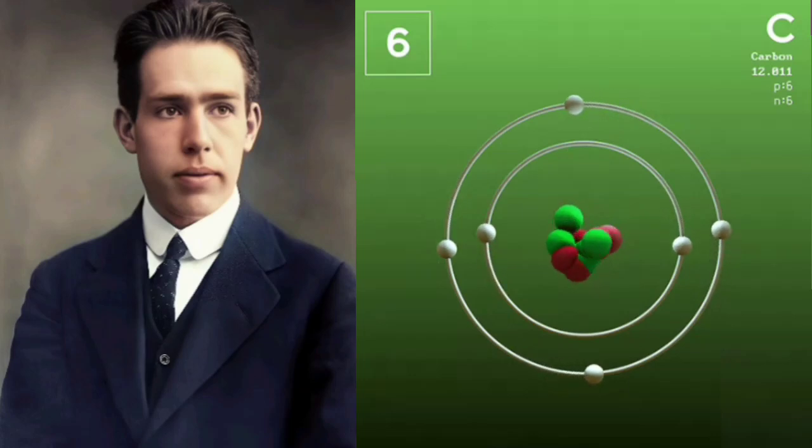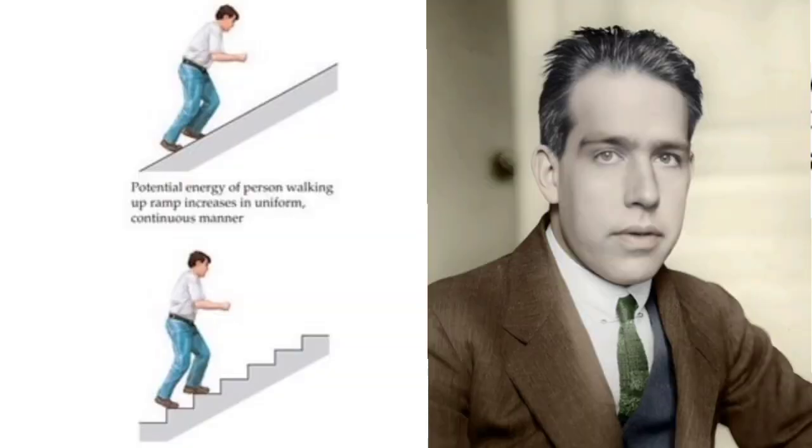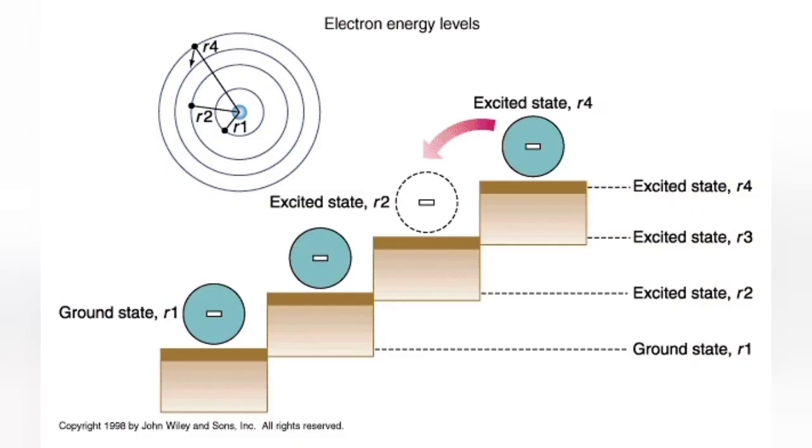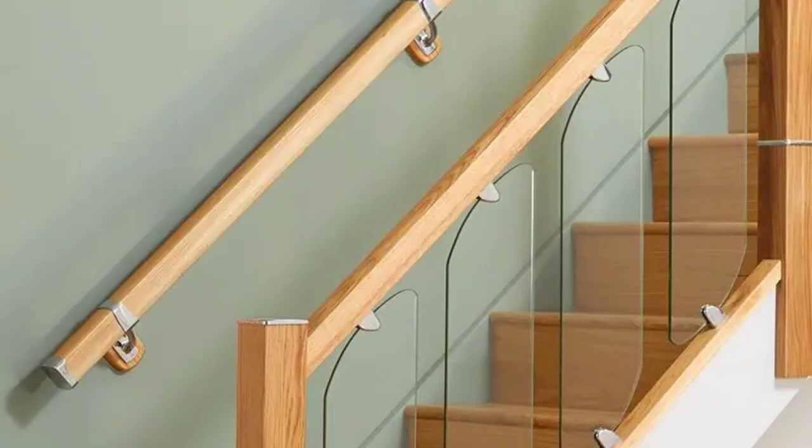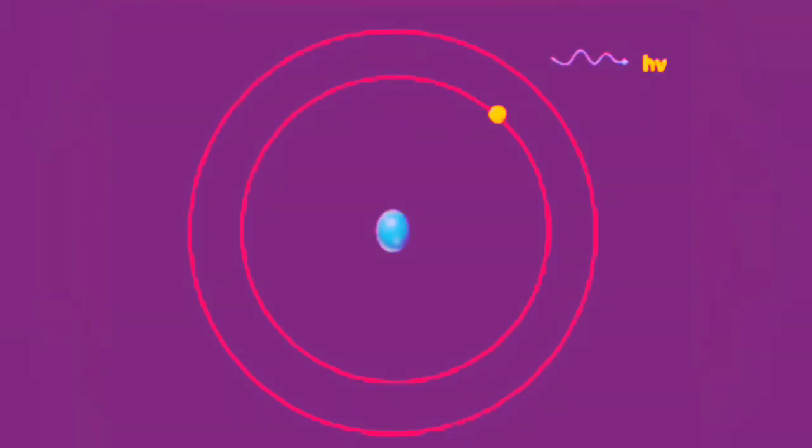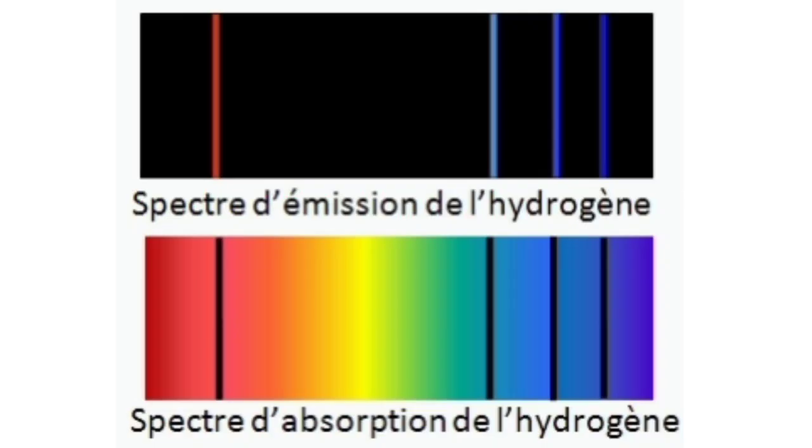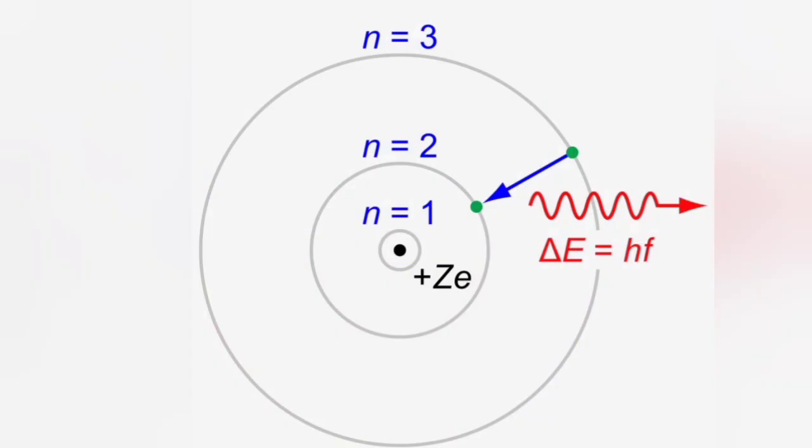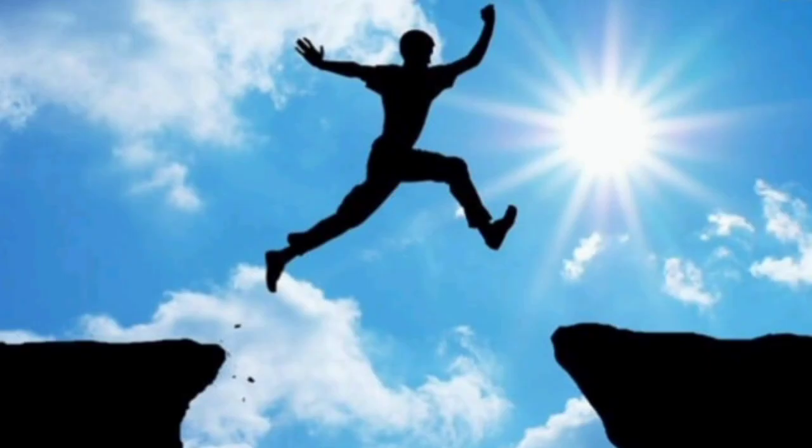A physicist named Niels Bohr came up with a model that combined Rutherford's planetary model with the idea of quantized energy. He proposed that electrons can only exist in specific discrete energy levels or orbits around the nucleus. They can't just spiral inward because they can't occupy the space in between these allowed orbits. It's like electrons are riding on a cosmic staircase, only allowed to step on certain steps. When an electron jumps between these energy levels, it either absorbs or emits a specific amount of energy corresponding to the difference between those levels. This helped explain why atoms emit light at specific wavelengths.